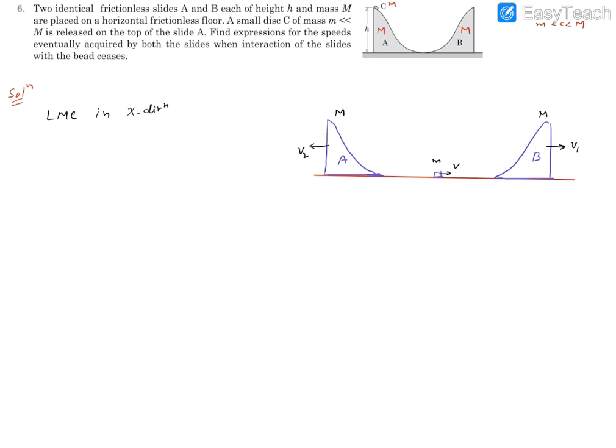So if you apply linear momentum conservation in x direction, you are going to get m v plus capital M v1 minus capital M v2. That's the final momentum equal to initial momentum. Initially everything was at rest, so this is going to be equation 1.